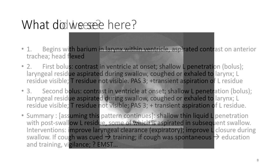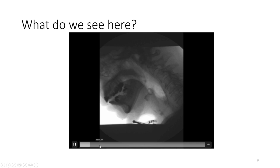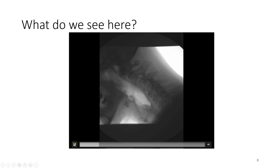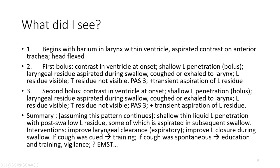And then we see the person cough and clear his airway, which we don't really know if this is a prompted cough or a spontaneous cough — and this is very important. So let's go back to the list: contrast in the ventricle at the onset, shallow penetration from the bolus, but also laryngeal residue that was aspirated during the pharyngeal stage.